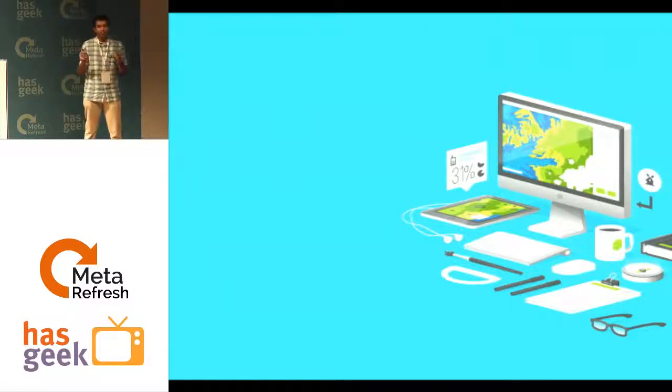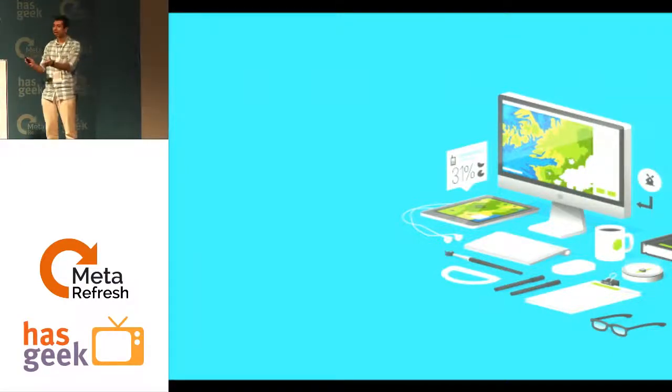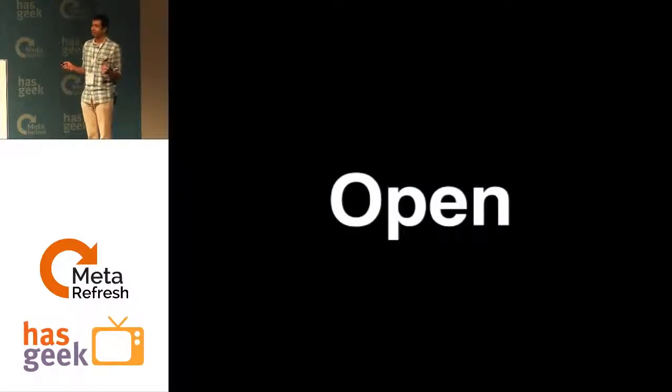At Mapbox, we have tools across the entire data pipeline: data collection, analysis, design, web publishing, and feedback. And all of this is open source — the JavaScript libraries, the rendering libraries, the design, the styles, the CSS libraries that you can use. Everything is open.